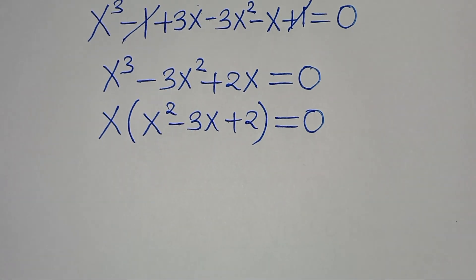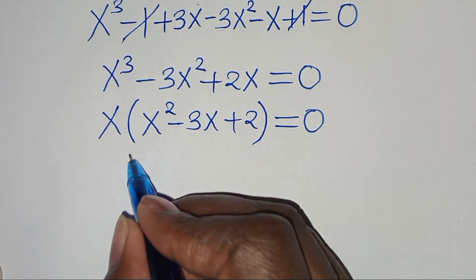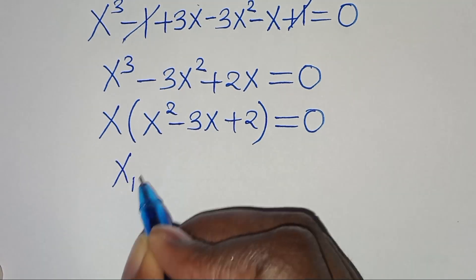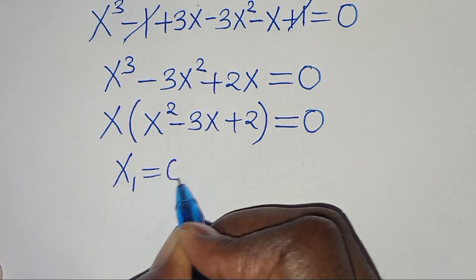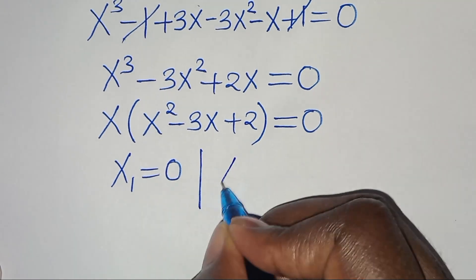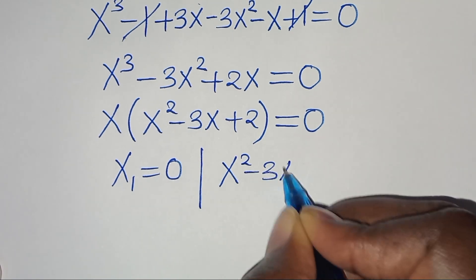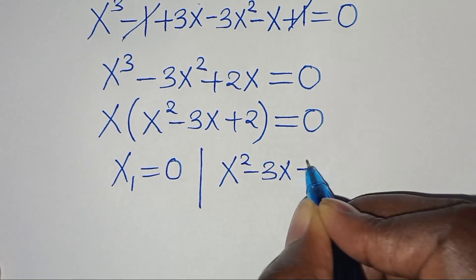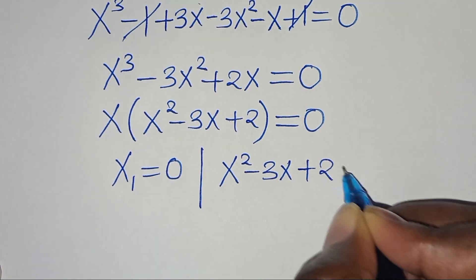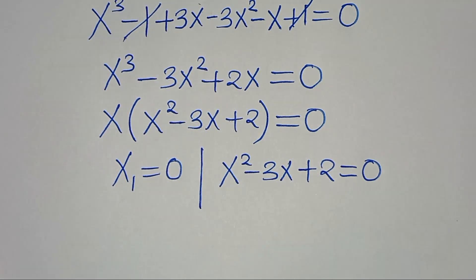So we have got 2 parts here: we have that x1 is equal to 0, and we have x to the power of 2, minus 3x plus 2, this is equal to 0.